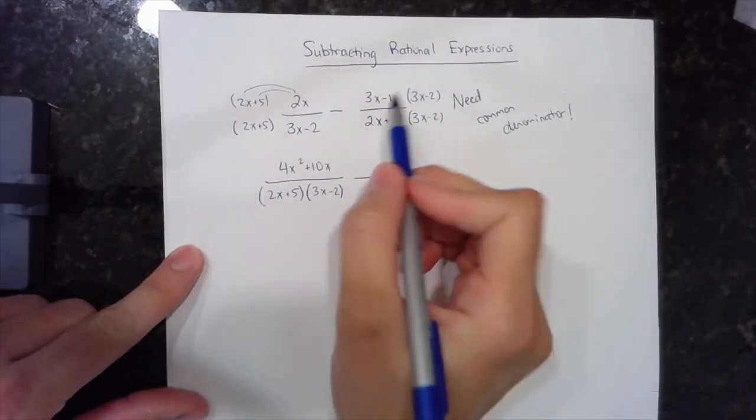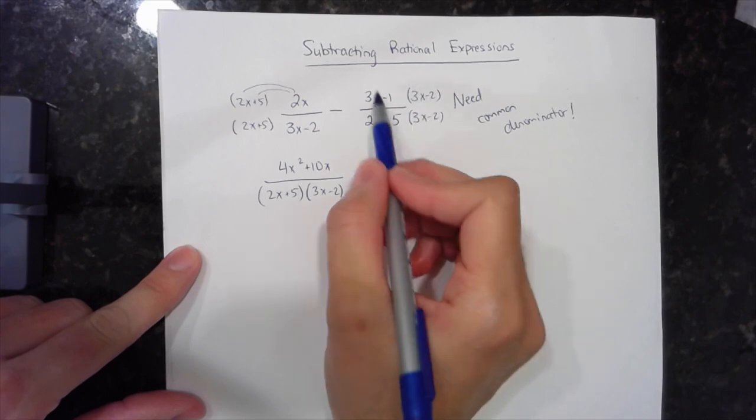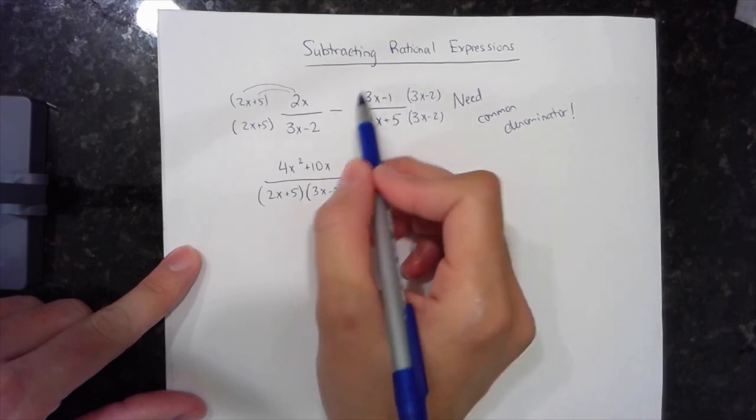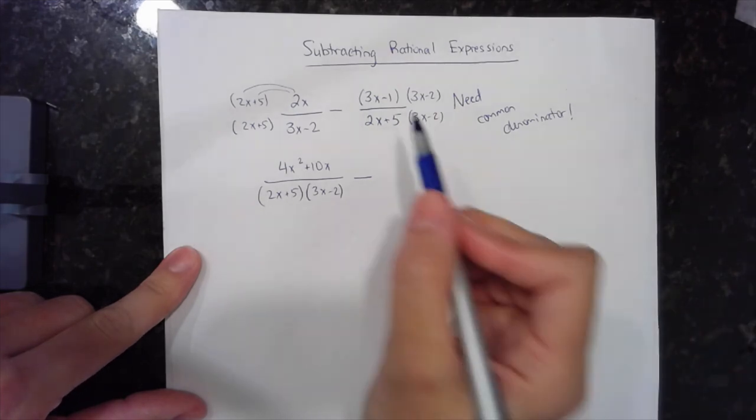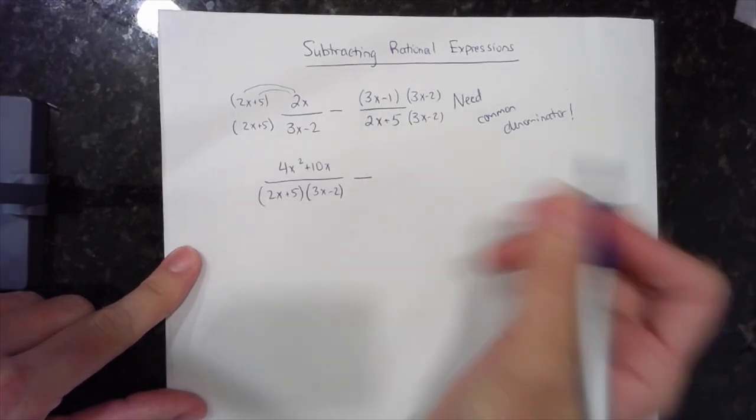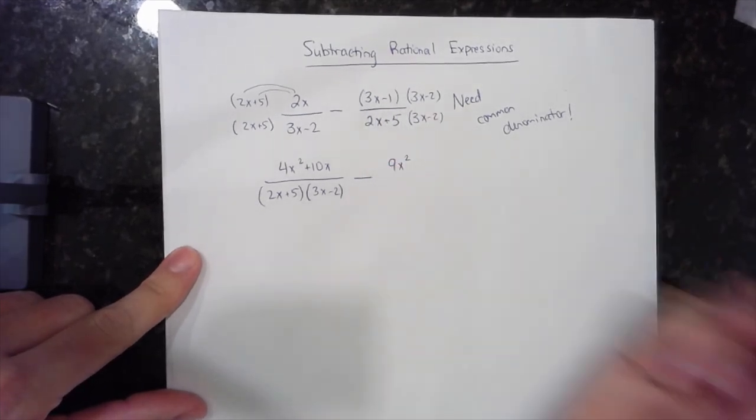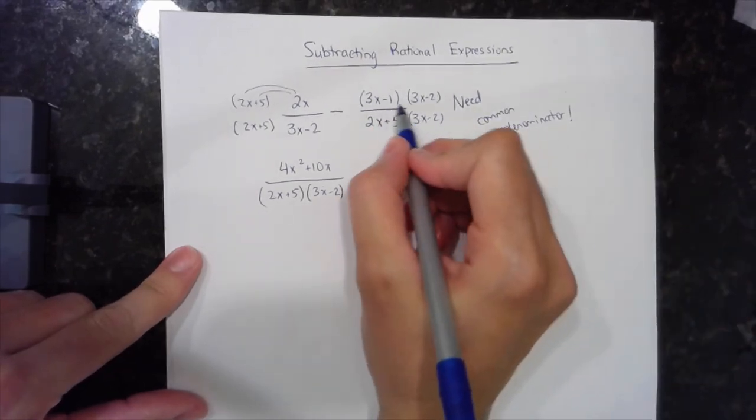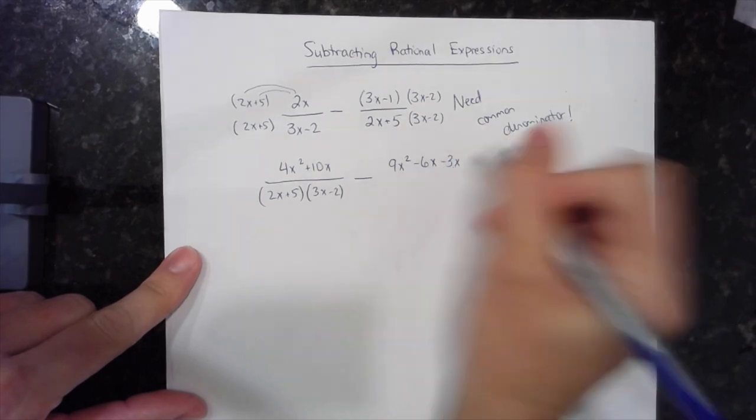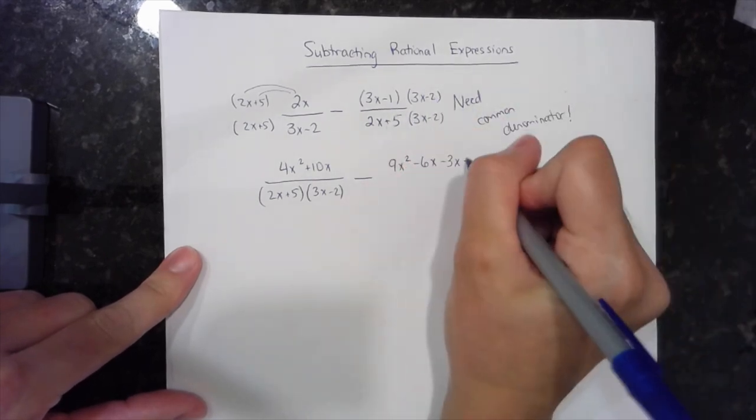Minus the product of these two, which is a FOIL situation because I have a binomial times a binomial. So I'm going to do FOIL, which means multiply the first two terms, 3x times 3x, 9x squared, the two outer terms, minus 6x, the two inner terms, minus 3x, and the two last terms, plus 2.